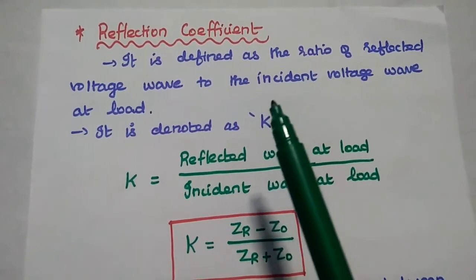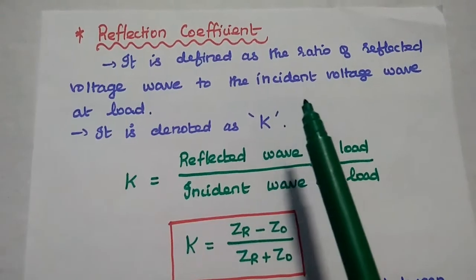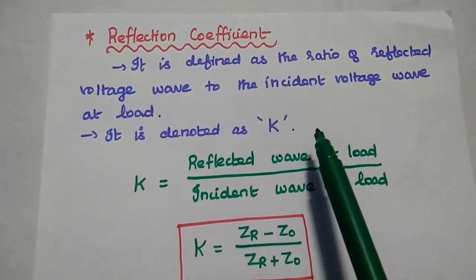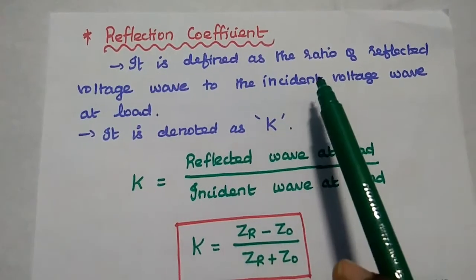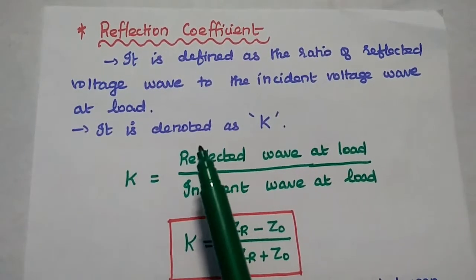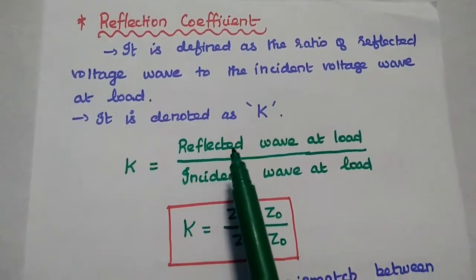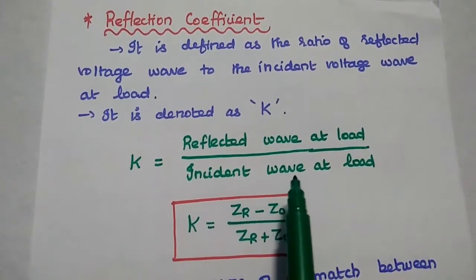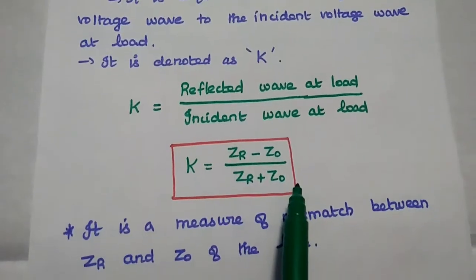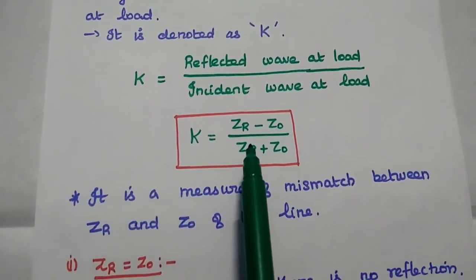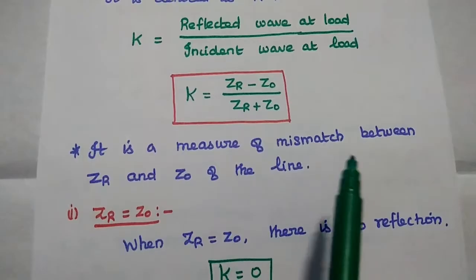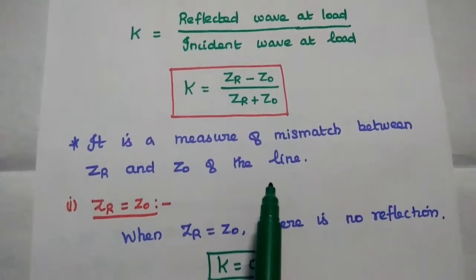Reflection coefficient is a parameter which is mainly used to measure the mismatch between the characteristics impedance and the receiving end impedance, that is load impedance. It is defined as the ratio of reflected voltage wave to the incident voltage wave at load. It is denoted as capital K, and it is equal to ZR minus Z naught divided by ZR plus Z naught. Here ZR is the receiving end impedance and Z naught is the characteristics impedance. It is mainly used to measure the mismatch between ZR and Z naught of the transmission line.